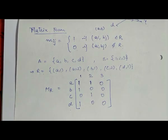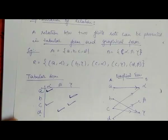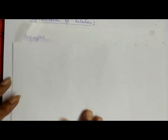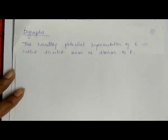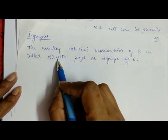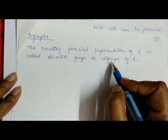So there are three forms so far: tabular, graphical, and matrix. Now there is one more topic: DIGRAPH. A digraph means a directed graph — a graph that has direction. If we represent the pictorial representation of R in the form of a directed graph, we call it a digraph.